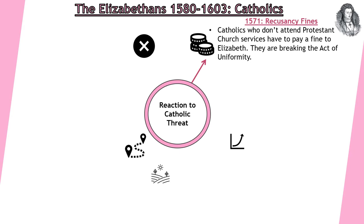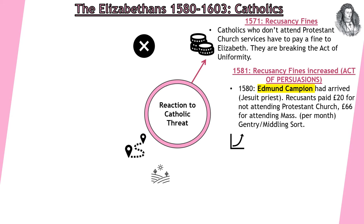In direct response to the papal bull, she introduces recusant fines. Catholics who don't attend Protestant church services have to pay a fine to Elizabeth because they are breaking the Acts of Uniformity. In 1581, these fines are increased — this is called the Act of Persuasions. Following Edmund Campion arriving in England in 1580, Catholics have to pay a £20 fine for not attending Protestant church, but £66 if found attending Catholic Mass instead — per month. This is mainly going to affect the gentry and the middling sorts, because anybody below that wouldn't be able to afford it, which is why most Catholics from the lower classes generally converted or conformed early on.